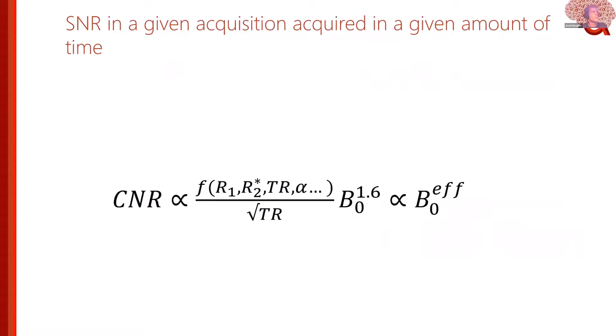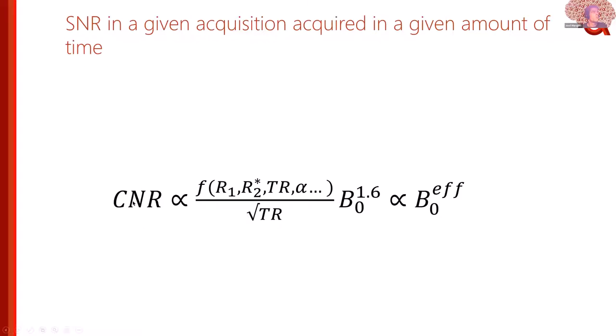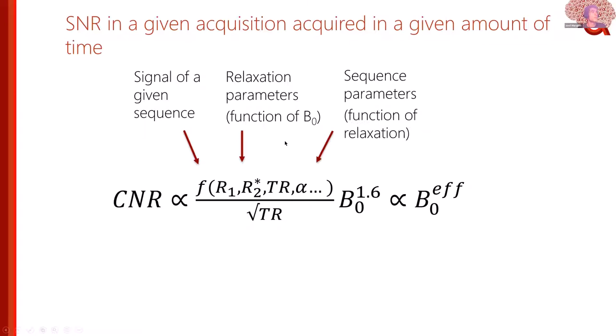There is extra complexity here: what we care about is not just SNR but how much contrast we have between different structures, and how much contrast we have in a given amount of time. To frame it properly: you choose a pulse sequence, consider its relaxation parameters as a function of field strength, optimize the parameters based on relaxation, and then maximize acquisition efficiency.